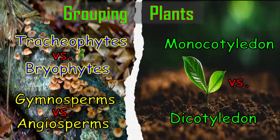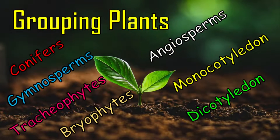Hello everyone. Today we're looking at the grouping of plants, and we're going to look at groups such as tracheophytes versus bryophytes, gymnosperms versus angiosperms, and monocotyledon versus dicotyledon. Monocotyledon and dicotyledon will be our main focus for today. Before we dive into the content, we need to familiarize ourselves with the terms conifers, gymnosperms, tracheophytes, bryophytes, angiosperms, monocotyledon, and dicotyledon.